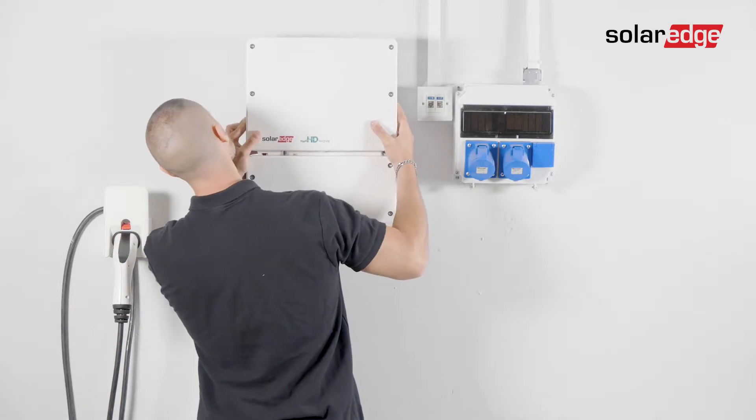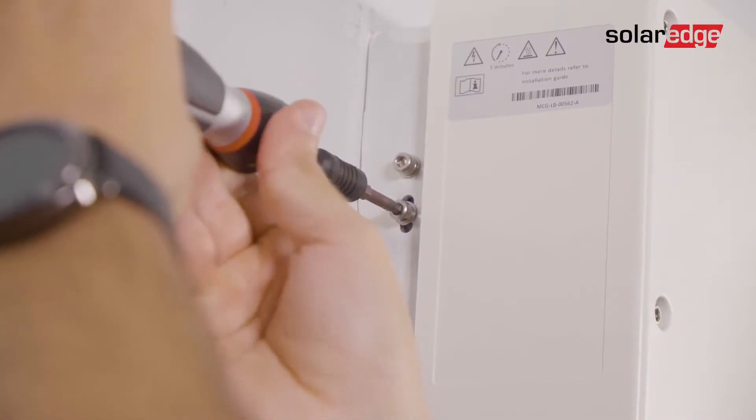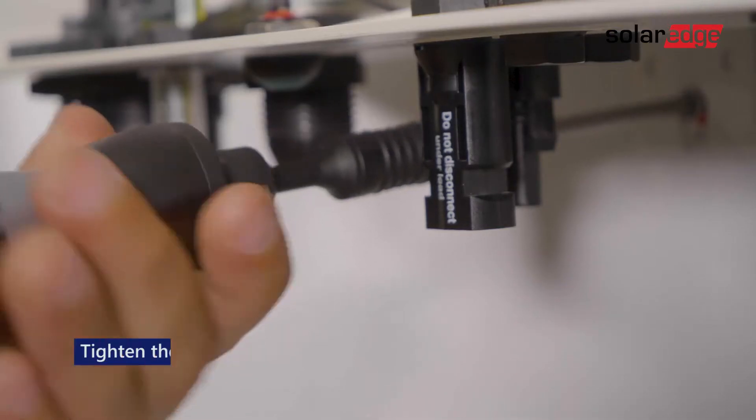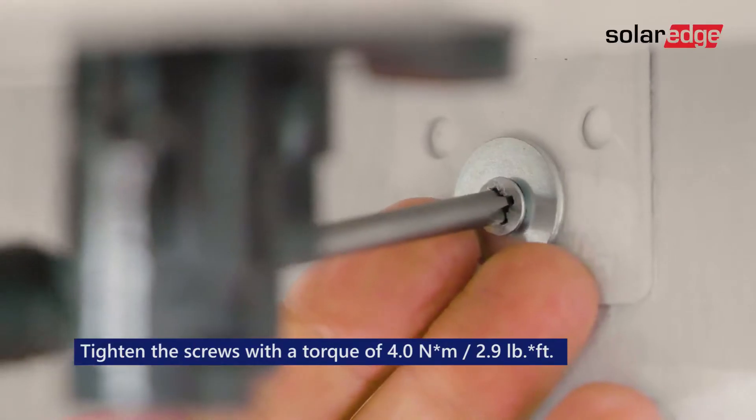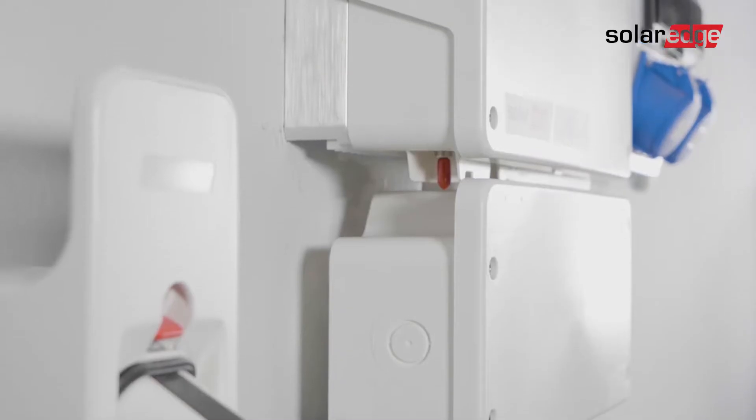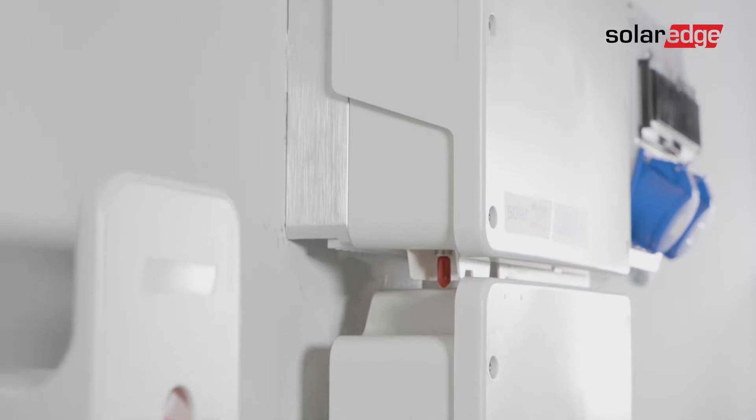Hang the inverter on the bracket and then insert the two supplied screws on both sides of the inverter and firmly tighten them to the bracket. Then secure the connection unit to the wall. The EV charging single phase inverter is now mounted.